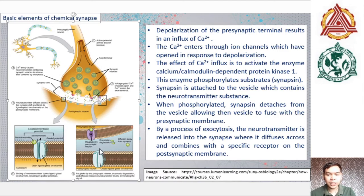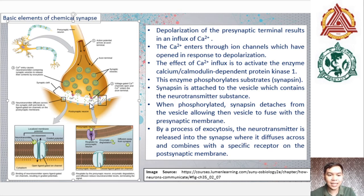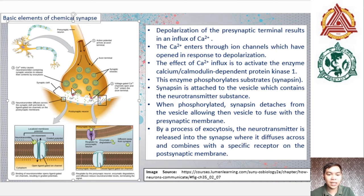Depolarization of the synaptic terminal results in an influx of calcium through ion channels that have opened in response to depolarization. The effect of calcium influx is to activate the enzyme calcium-calmodulin-dependent protein kinase 1. This enzyme phosphorylates a substrate known as synapsine. Synapsine is attached to the vesicle which contains the neurotransmitter substance. When phosphorylated, synapsine detaches from the vesicle, allowing the vesicle to fuse with the pre-synaptic membrane. By a process of exocytosis, the neurotransmitter is released into the synapse where it diffuses across and combines with a specific receptor on the post-synaptic membrane.